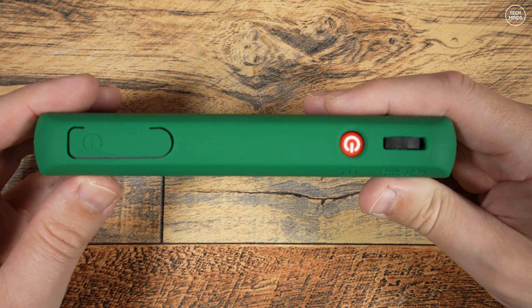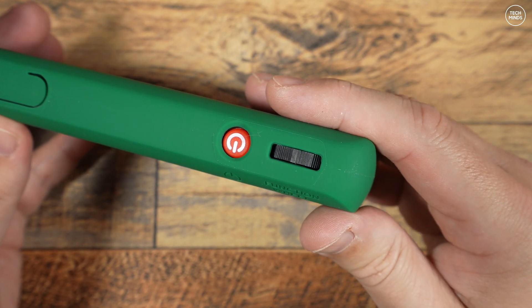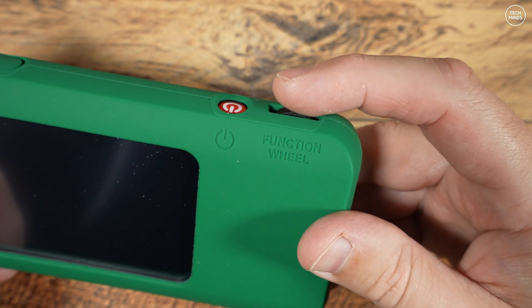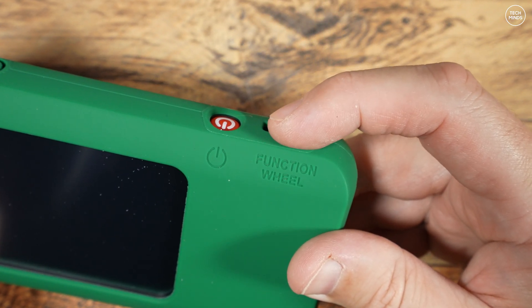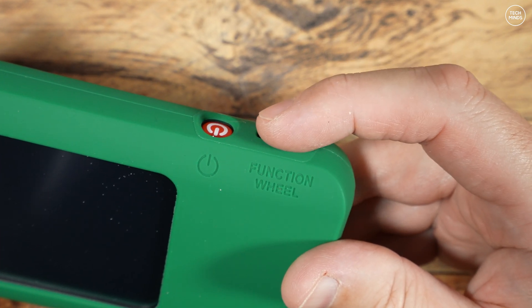On the top right we have a power button and the famous function wheel, which is essentially a jog wheel with a push switch. Incidentally, turning it on was quite easy, but to turn it off I had to hold that power button down for quite some time, so not sure if there's an issue there or whether that's by design.